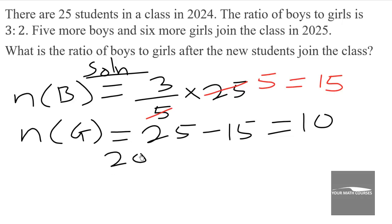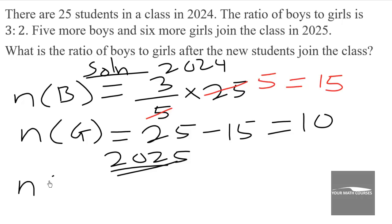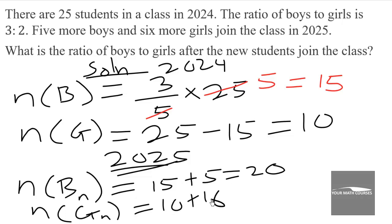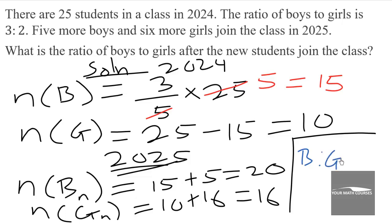In 2025, if 5 more boys join the class, the new number of boys will be 15 plus 5, which is 20. The new number of girls will be 10 plus 6, which is 16. So the ratio of boys to girls in 2025 will be 20 to 16, which simplifies to 5 to 4.